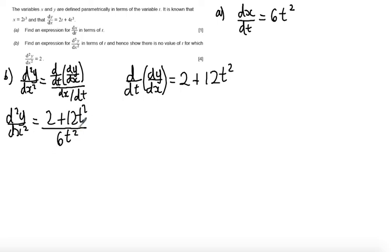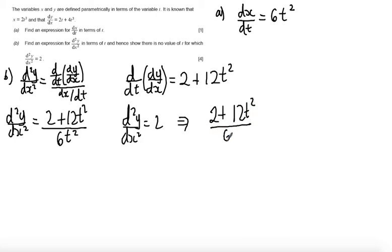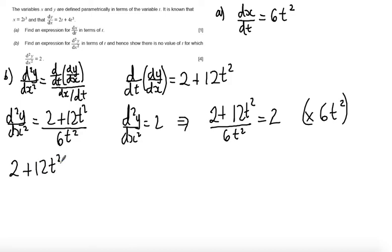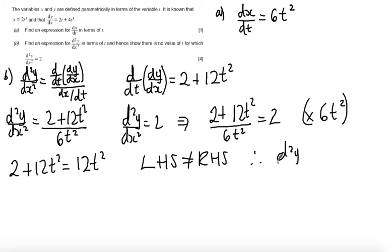To show there is no value of t for which d²y/dx² equals 2, let's substitute it in. Setting (2 plus 12t squared) over 6t squared equal to 2, and multiplying both sides by 6t squared gives 2 plus 12t squared equals 12t squared. This is inconsistent because the left-hand side does not equal the right-hand side. Therefore d²y/dx² cannot be equal to 2.